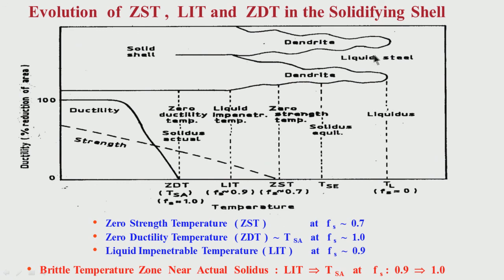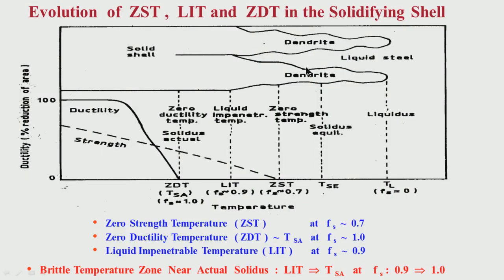Fortunately, since liquid steel is available between solid fraction roughly 0.72 and 0.9, whenever there is crack formation, this liquid steel will be available to heal up the cracks. So crack formation will be there because it is brittle — strength is there but there is no toughness or ductility — so whatever strain is being impinged on the shell will cause crack formation. But between solid fraction 0.7 to 0.9, since liquid steel is available, it will move and heal those cracks, because liquid steel is available at the surface regions of the dendrites in the inter-dendritic region.